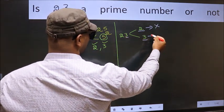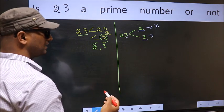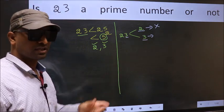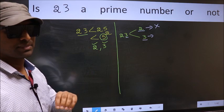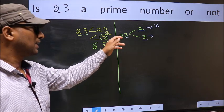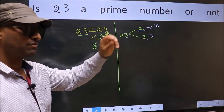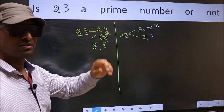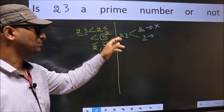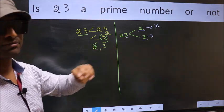Now for 3. To check divisibility by 3, for that we should add the digits. What I mean is, 2 plus 3, we get 5. And 5 is not divisible by 3. So this number also not divisible by 3.